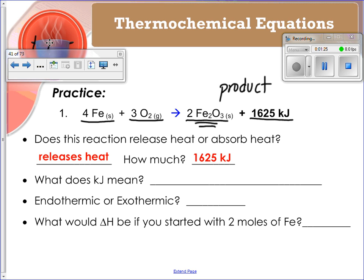This value is dependent, however, on the moles that are here. So for every four moles of iron, you get the 1625. Every three moles of the O2, that's what you get. So that's kind of an important factoid to remember.